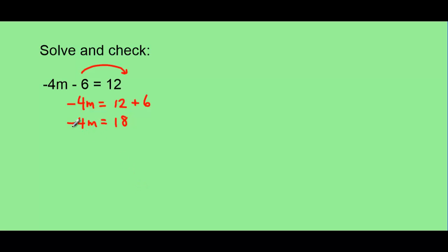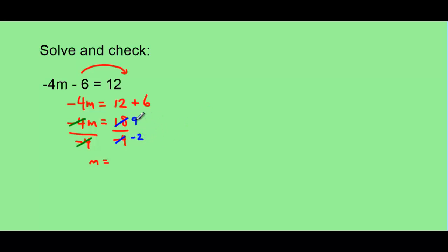In order to get m by itself, if it's being multiplied by negative 4, we need to divide by negative 4 on both sides. Negative 4 and negative 4 will both cancel, leaving us with just m. 18 divided by negative 4 — well, 4 doesn't go into 18 evenly, so we're going to be left with a fraction. Let's leave our answer in fraction form, reduced as much as possible. 18 and 4 are both divisible by 2, reducing to 9 over negative 2. A negative sign should never stay in the denominator, so we put the negative sign out front: negative 9 over 2.